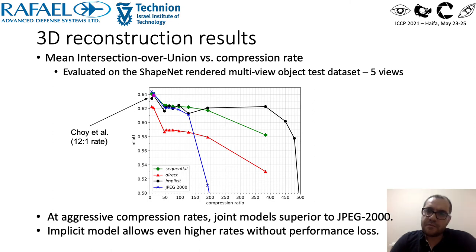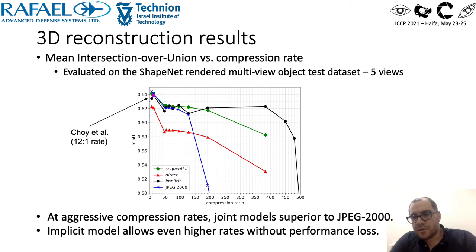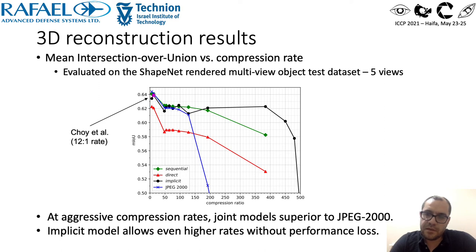Here is the 3D reconstruction MinIOU versus compression rate on the ShapeNet rendered multi-view object database. In blue is the performance when JPEG 2000 was used for image compression. We see that all our networks outperform JPEG 2000 at high compression rates. The direct model is inferior at lower compression rates and the implicit model is best overall.